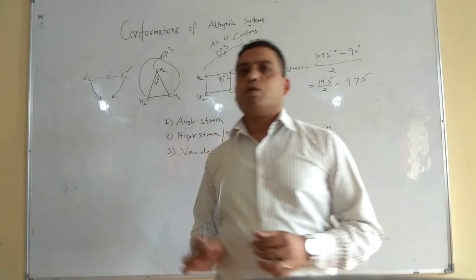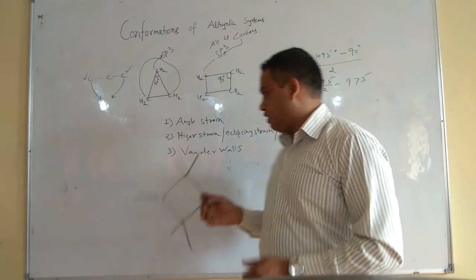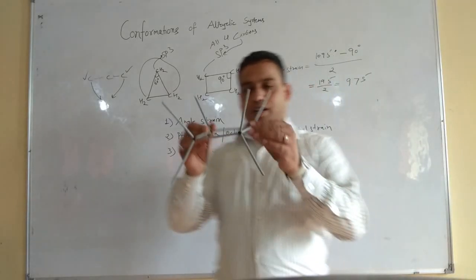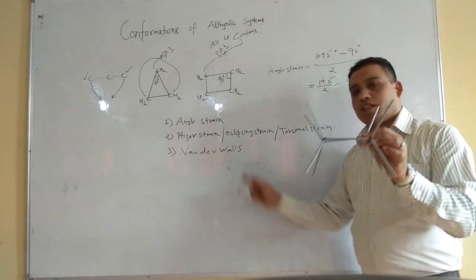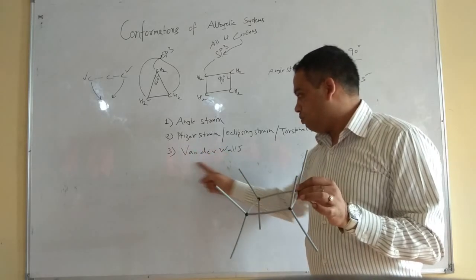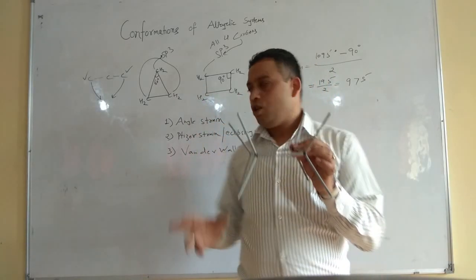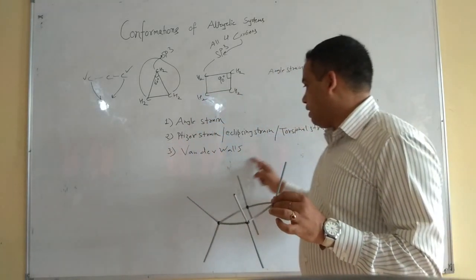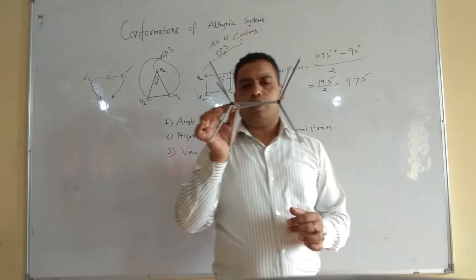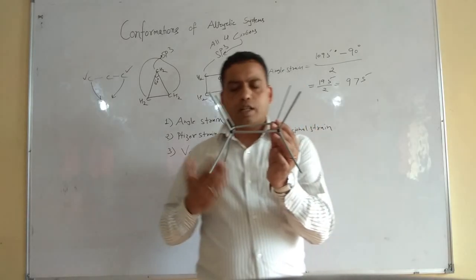So cyclobutane is associated with two kinds of strain: first, angle strain, and second, Pitzer, torsional, or eclipsing strain. I am not mentioning van der Waals strain here because as long as hydrogens are present there is not much role for it — van der Waals repulsion comes into picture only when you replace hydrogens with bulky groups. Therefore, cyclobutane will adopt some other conformation to reduce these strains.